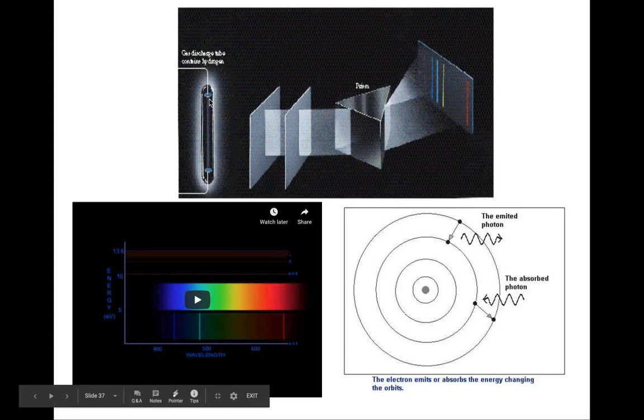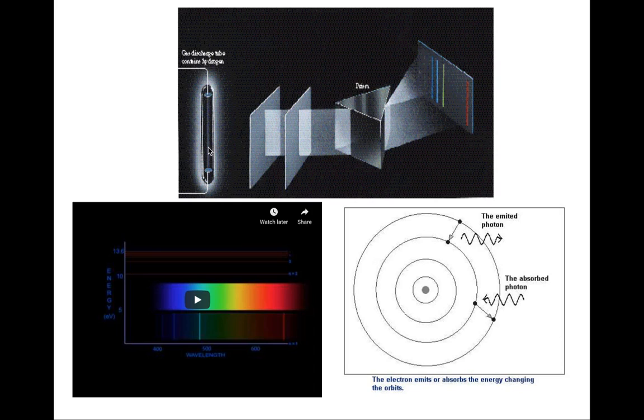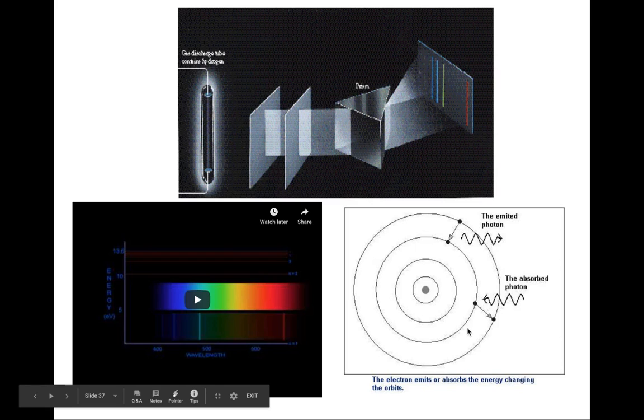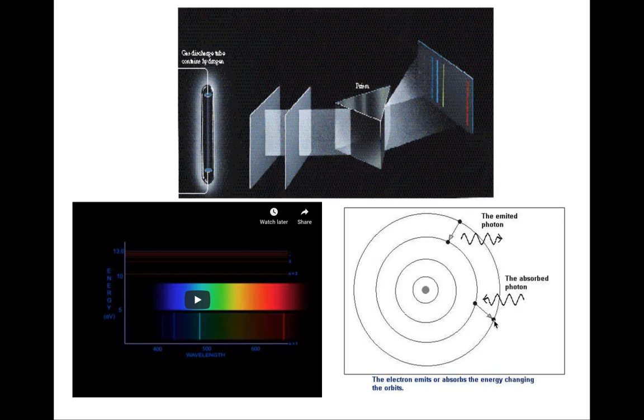So again, here is our gas discharge tube. When you pass electricity through it, what happens is the electrons become excited. When they become excited, what we think happened was that these electrons would start off in their specific ground state and then they would jump to a higher energy level known as the excited state.